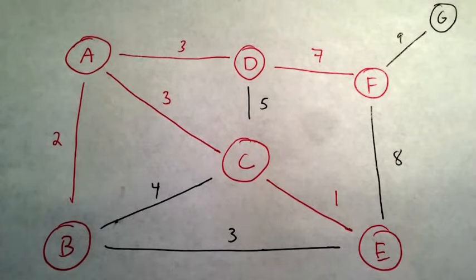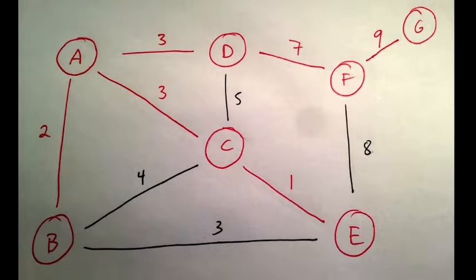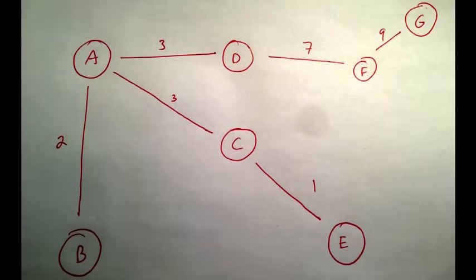Now we keep adding edges until all nodes are in the same tree. In this case, F is added with a weight of 7. Finally, G is added to the MST, and all nodes are now in the same tree. We have our minimum spanning tree.